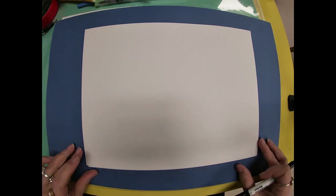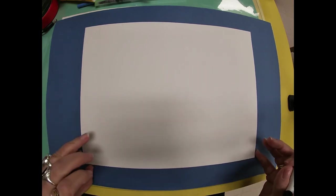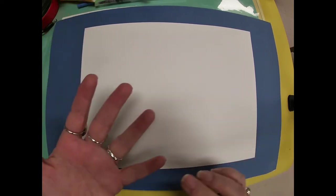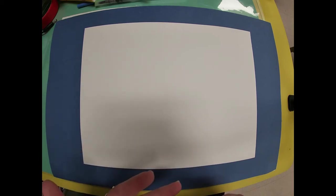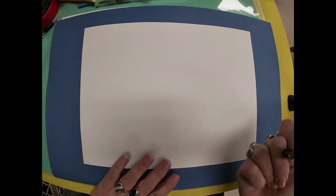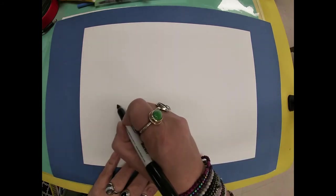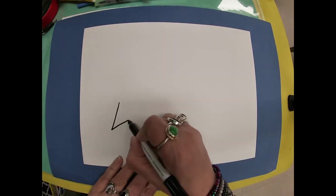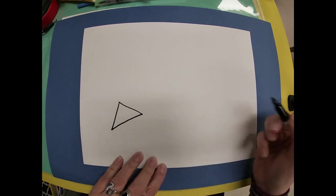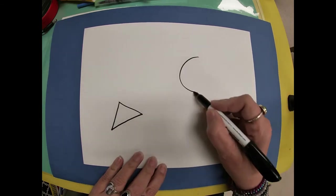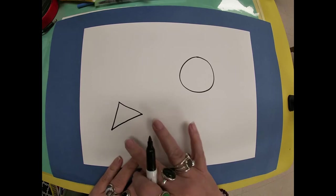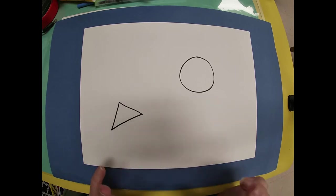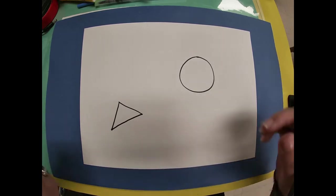And the way we start is we're going to draw two shapes that are shapes that we know, like a circle, a rectangle, a square, a triangle. And you can choose and you can put them anywhere on your paper. So they can be any size. So I'm going to do a triangle and then maybe a circle up here. You don't have to do what I do. Pick two shapes and then put them on the paper.